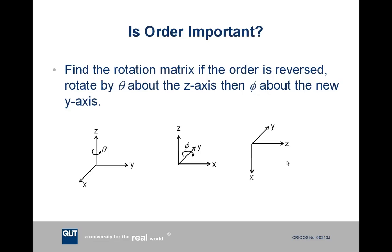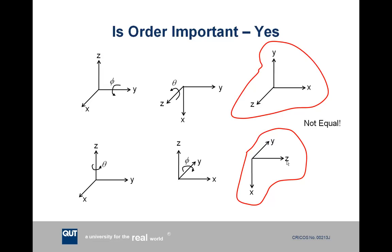Starting from the diagram at the bottom left, we rotate by theta around the z-axis, giving the updated axis in the middle of the slide, and then rotate by phi around the y-axis. Using angles of about 90 degrees to make things clear, this is the end axis we end up with when doing the rotations in the opposite order. Comparing the two results, the axes are very, very different — they don't match up at all.